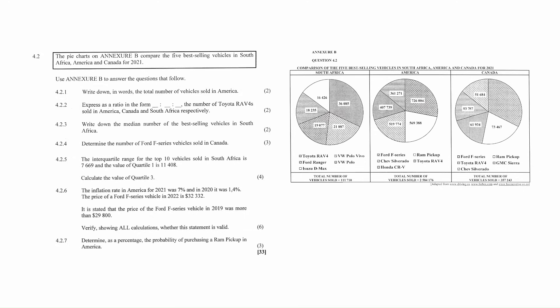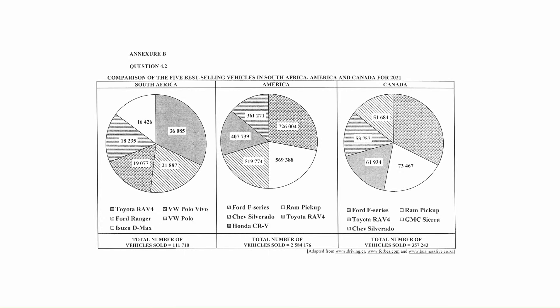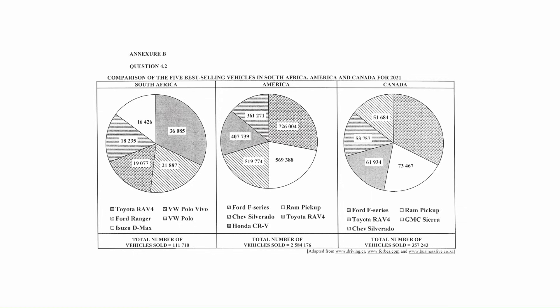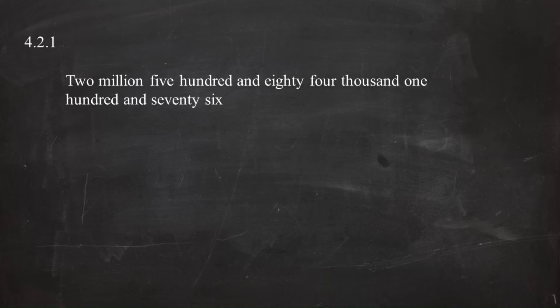Question 4.2 consists of five data handling questions, one finance question, and one probability question designed to assess your understanding of pie charts, ratios, median, interquartile range, and inflation rates. You are given three pie charts in Annexure B comparing the five best-selling vehicles in South Africa, America, and Canada in 2021. In question 4.2.1, you have to write down in words the total number of vehicles sold in America. From the table, the total number of vehicles sold in America was 2,584,176.